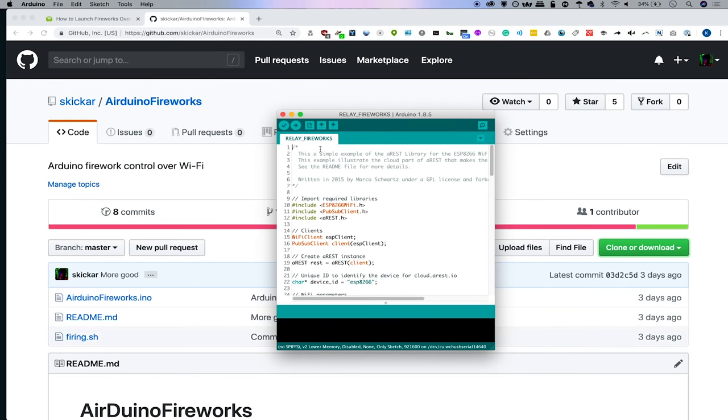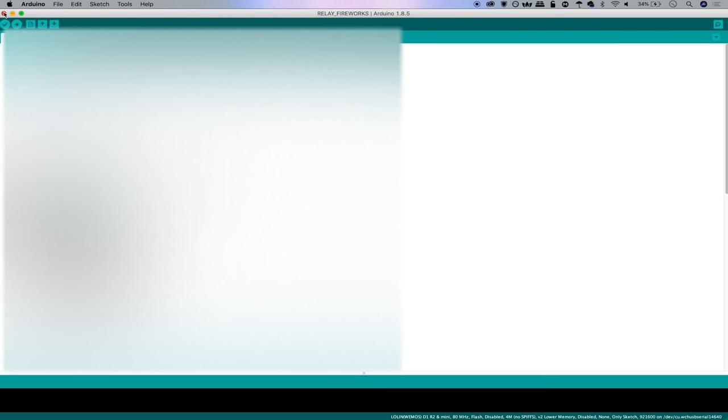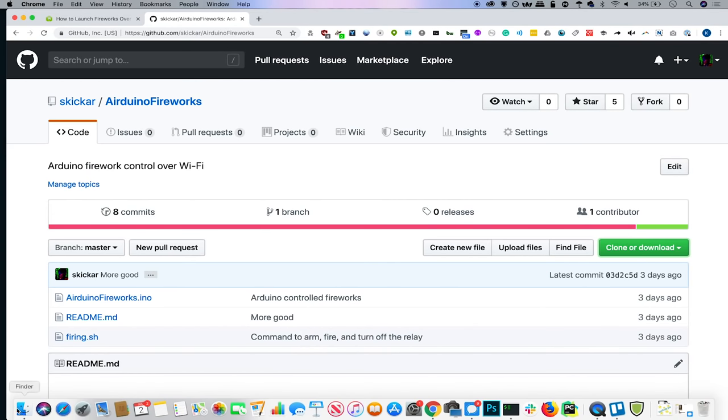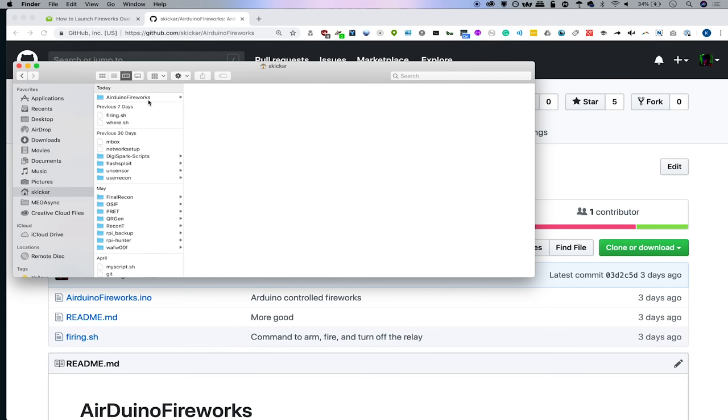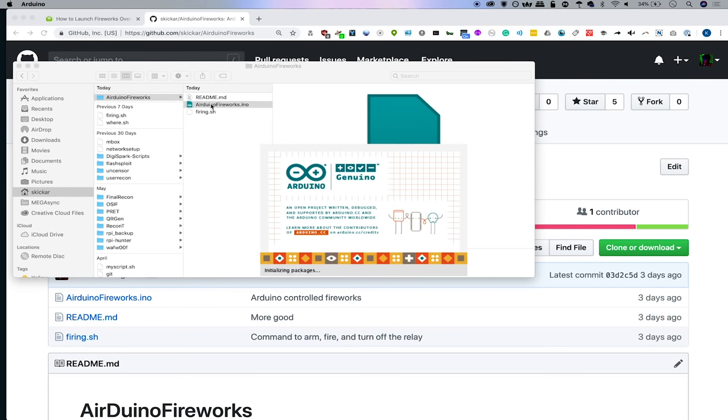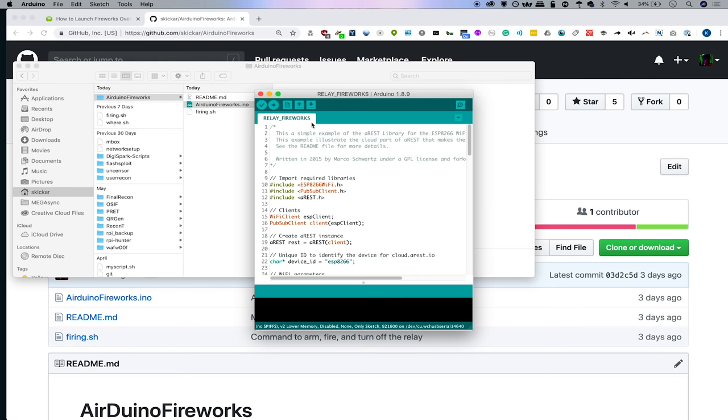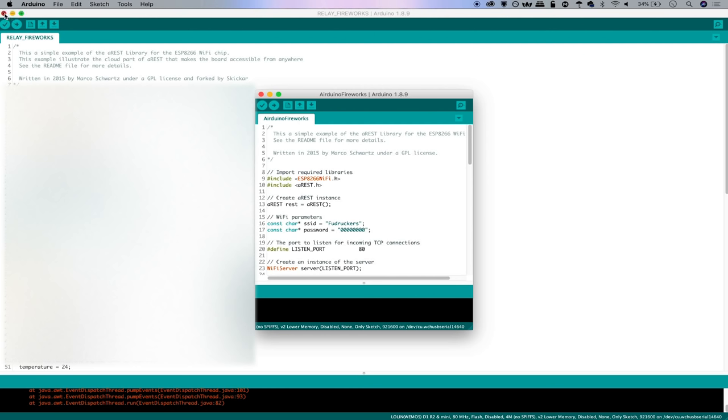Open up arduinofireworks.ino and inside the Arduino file, we should see this relay firework sketch that basically allows us to fire off the firework from a fixed access point. Let's go ahead and pick the right one. Arduinofireworks, here we go.